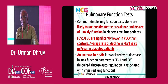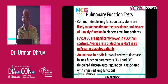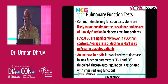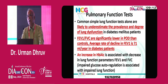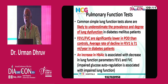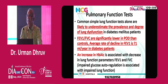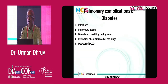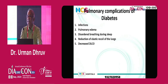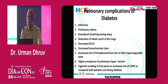All studies so far have shown that it is not the duration of diabetes which impacts the lung, but rather impaired glycemic control — an increase in HbA1c persisting for more than one year — that ultimately leads to impaired lung function. There are many pulmonary complications of diabetes that we can observe.